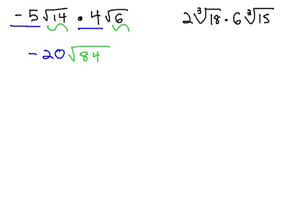Of course, no answer is final until it's been simplified, so let's factor 84. We might see it's divisible by 4 and 21. 4 is divisible by 2 and 2, and 21 by 3 and 7.